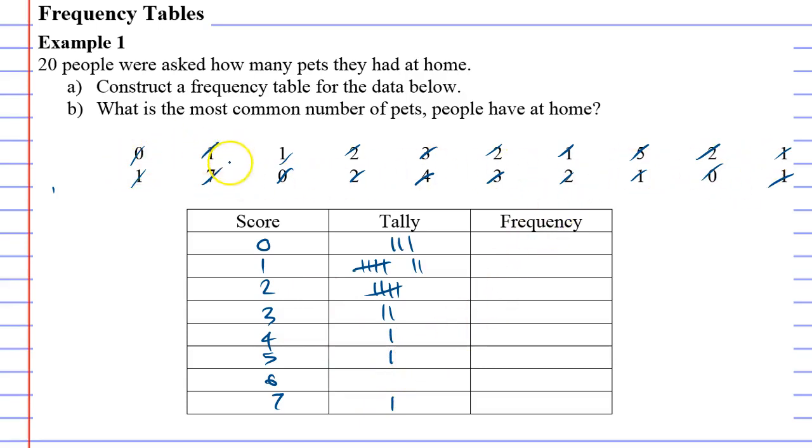Yep, they're all crossed off. And then you can write your frequency, which is exactly the same as your tally except a number. So we've got three, seven, five, two, one, one.